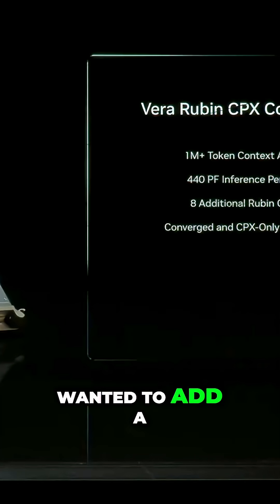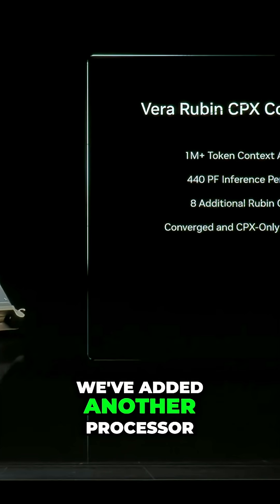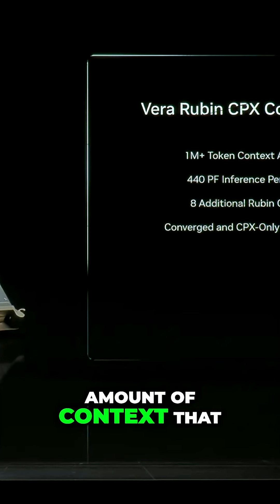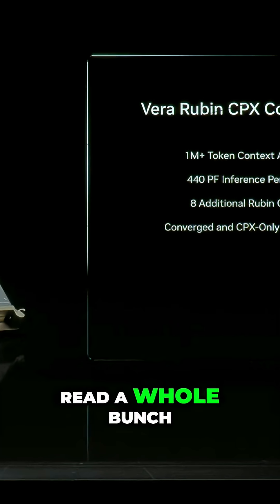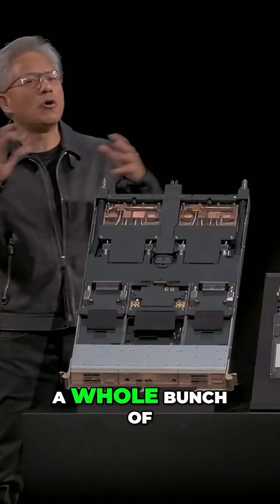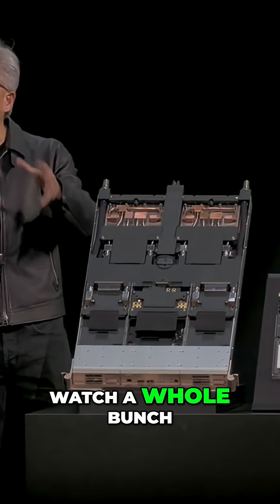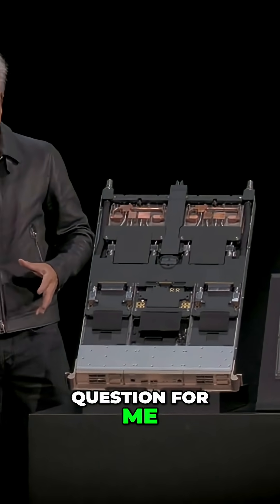If you decide you wanted to add a special processor, we've added another processor. It's called a context processor, because the amount of context that we give AIs is larger and larger. We wanted to read a whole bunch of PDFs before it answered a question, read a whole bunch of archive papers, watch a whole bunch of videos — go learn all this before you answer a question for me.